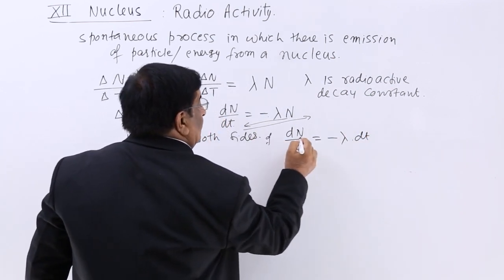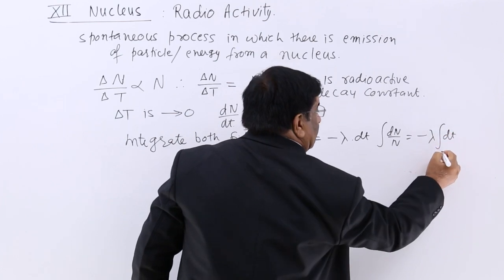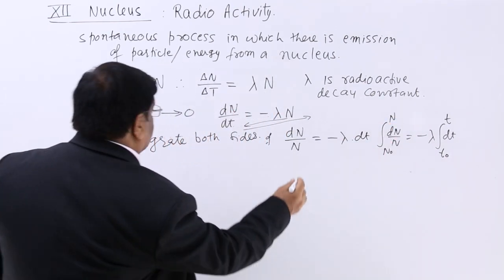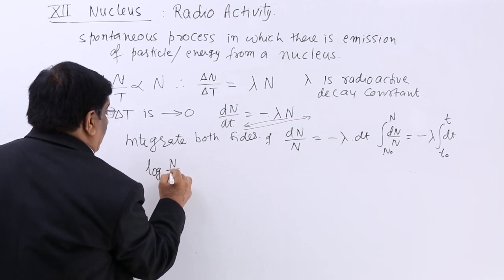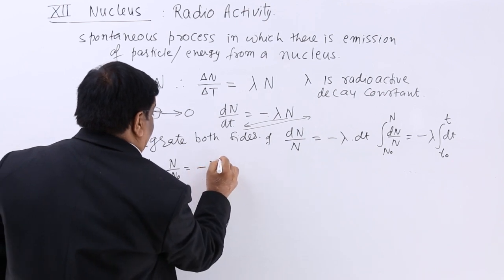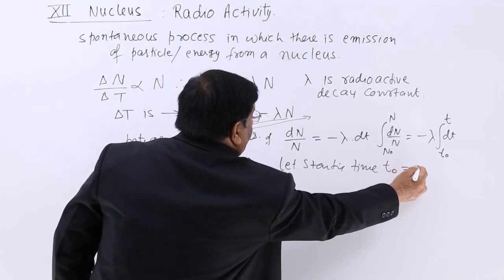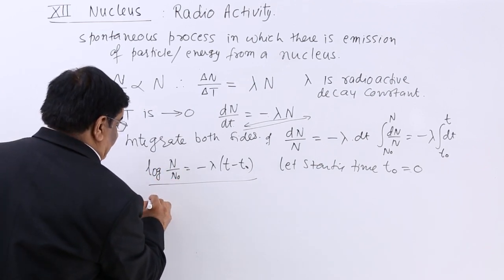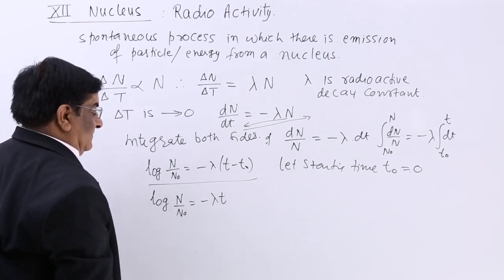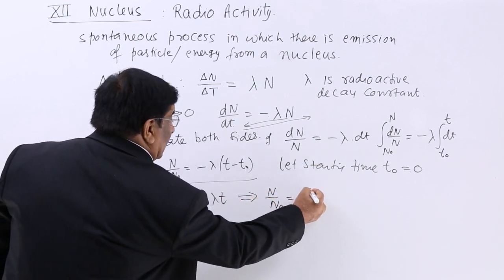Integrating both sides with limits N₀ to N and t₀ to t, we get: log(N/N₀) equals minus lambda times (t minus t₀). Setting t₀ equal to zero, this gives log(N/N₀) equals minus lambda t, so N/N₀ equals e to the power of minus lambda t.